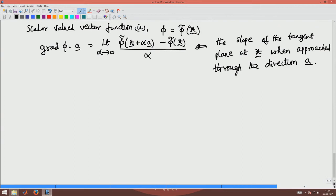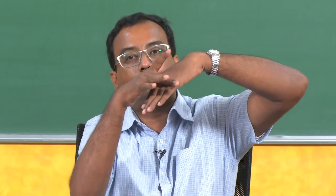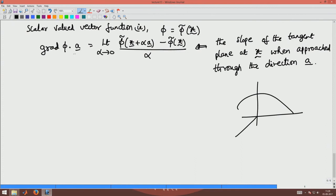In two dimensions, if I have a surface, there will be a tangent plane to the surface. If I approach the point through a direction A, what will be the slope of the line tangent to that point — A is that direction of approach. Different directions will have different slopes: one direction will have this slope, another direction will have a different slope, and hence different directions will have different slopes. The direction along which you approach is given by A.